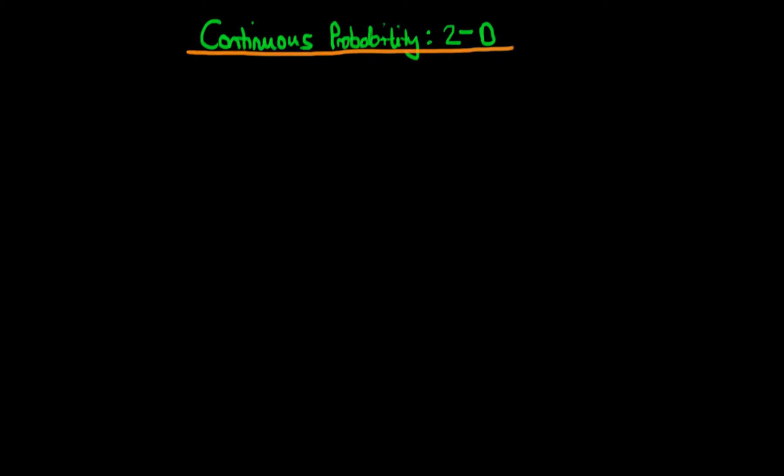In this video, I want to talk about how we can think about probabilities of continuous random variables when the probability is a function of more than one random variable. The example which I'm going to give here is the case of having two random variables.